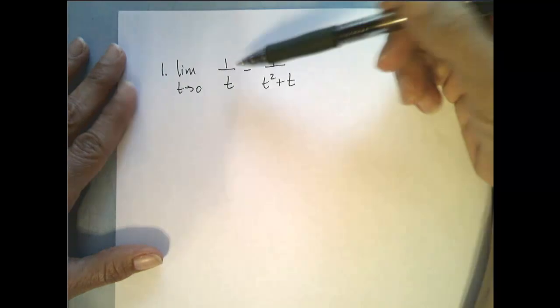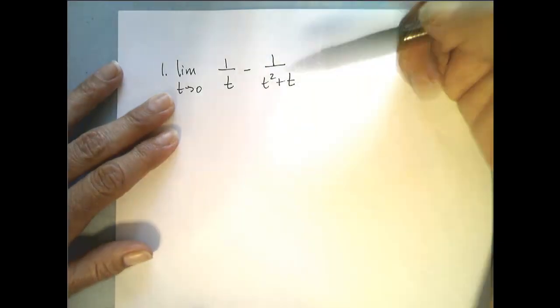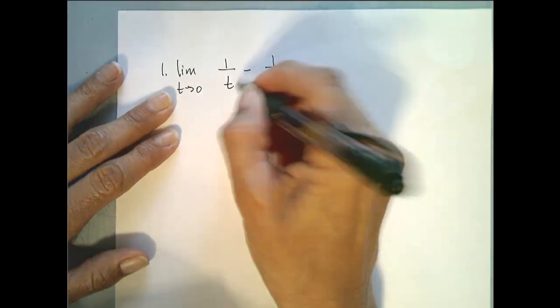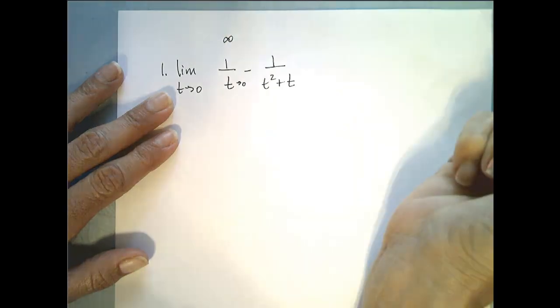The limit as t goes to 0 of 1 over t minus 1 over t squared plus t. Now I might try direct substitution but I will see that this bottom goes to 0 and the top goes to a nonzero number which means this is some kind of infinity situation.